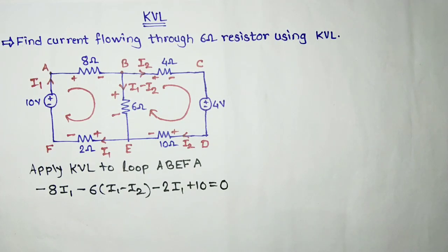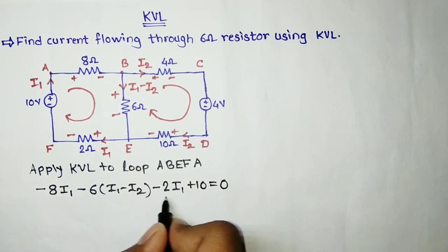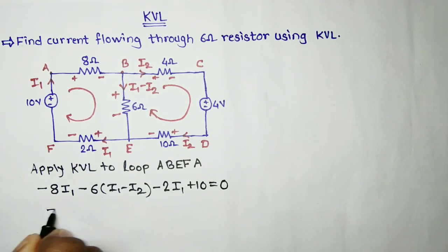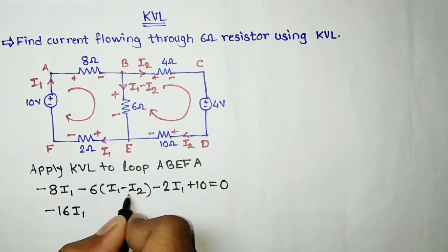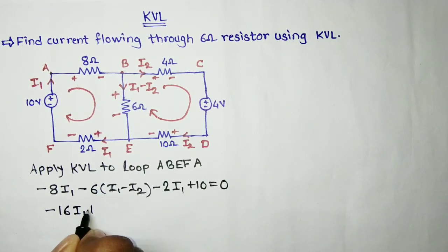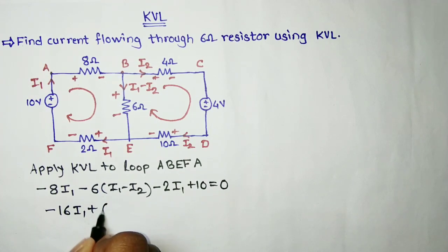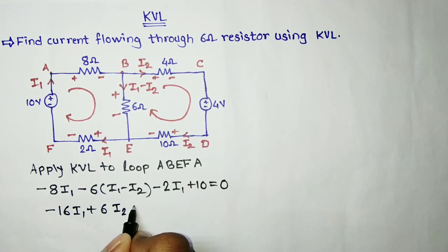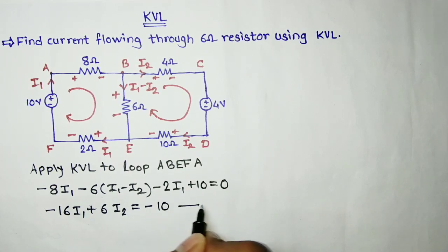Simplifying this equation: minus 8 minus 6 minus 2 gives minus 16 times I1, and minus times minus gives plus 6 times I2, equals minus 10. This is Equation Number 1.